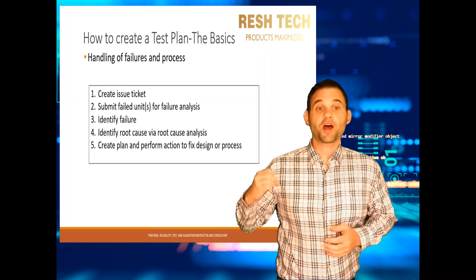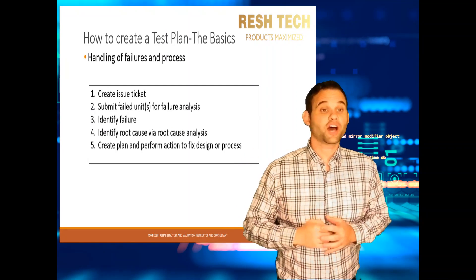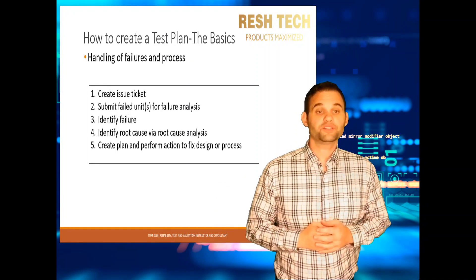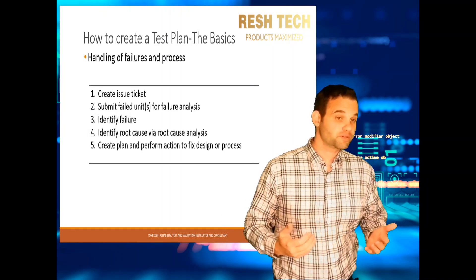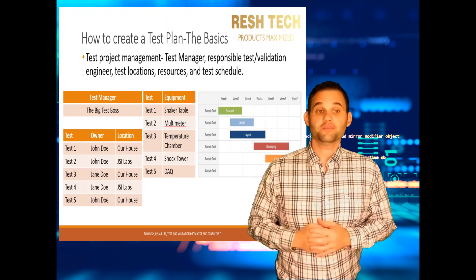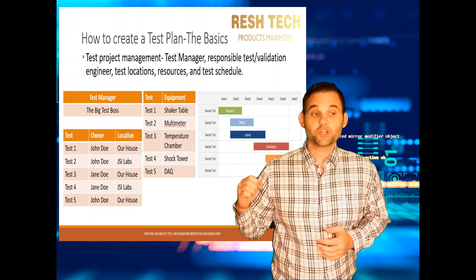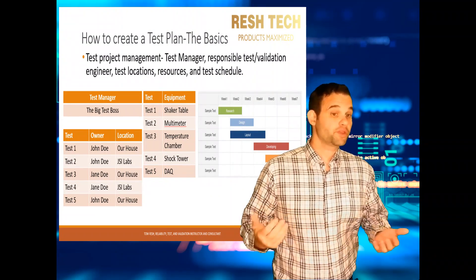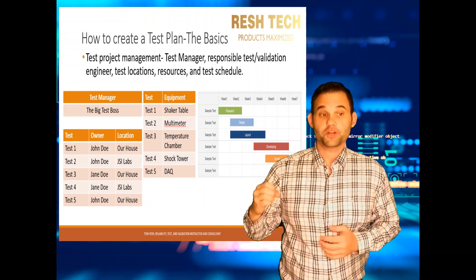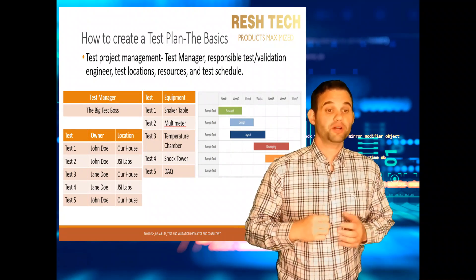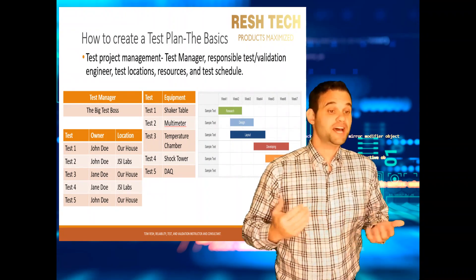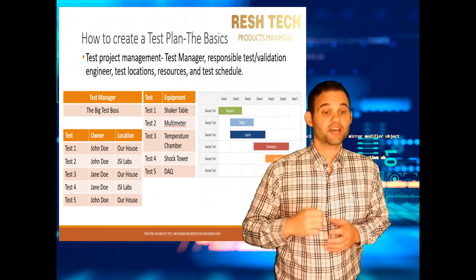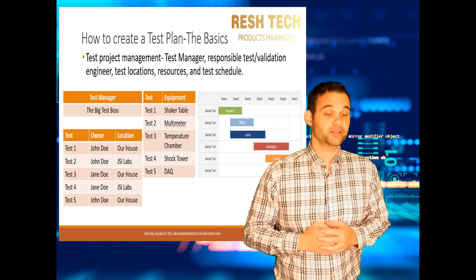Next, you will want to provide the process for handling failures, where issues are documented, the root cause analysis process, or provide the reference document number for the test failure handling procedure. Next up is test project management — this will list who is managing the testing and the test plan, the responsible test owners for each test, the test locations whether in your facility or at a third-party testing facility, resources including test equipment and support equipment, and the test schedule for the timeline the test plan will be executed against.